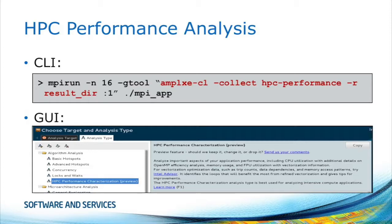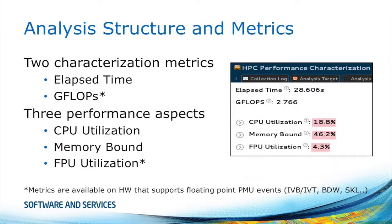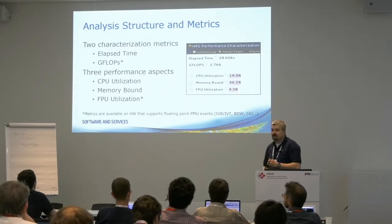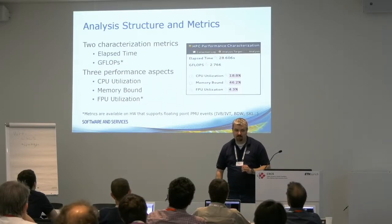You can either use -collect hpc-performance or select HPC performance characterization from the GUI. What it does is tell you a couple of key metrics. First of all, elapsed time and the gigaflop rate — with a footnote saying metrics are available on hardware that supports floating point PMU events. So that means Broadwell, to some limited extent KNL, Haswell, Ivy Bridge, Sandy Bridge, Knights Corner — those don't. It's not that many Intel CPUs, and it's especially embarrassing because Cray machines reported that number 30 years ago.